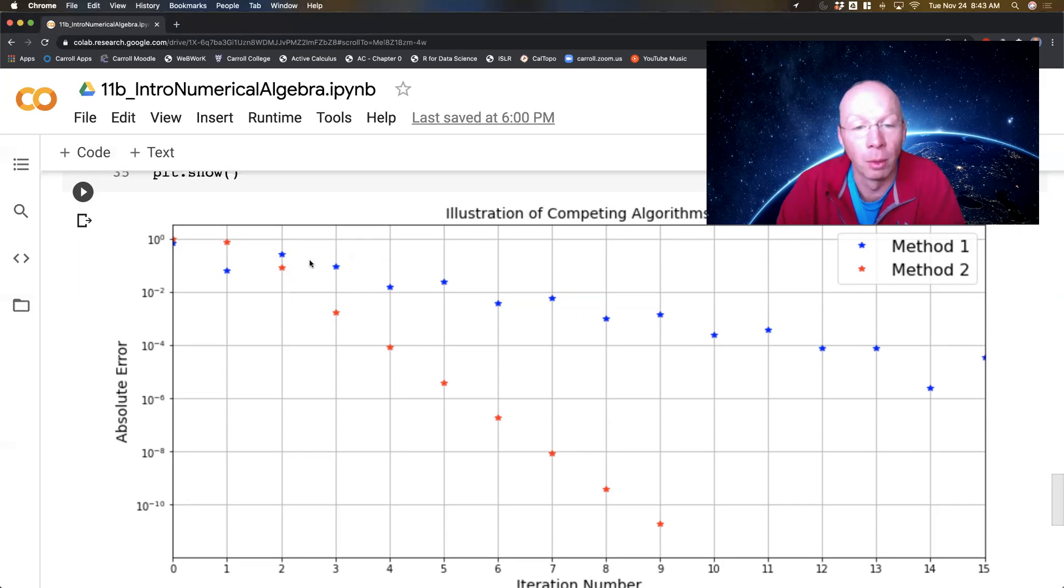Whereas on method number one, now sometimes it actually bumps up, but it looks like on average maybe it's improving by one order of magnitude with each step. So these are the sorts of things that we're going to play with throughout this chapter.